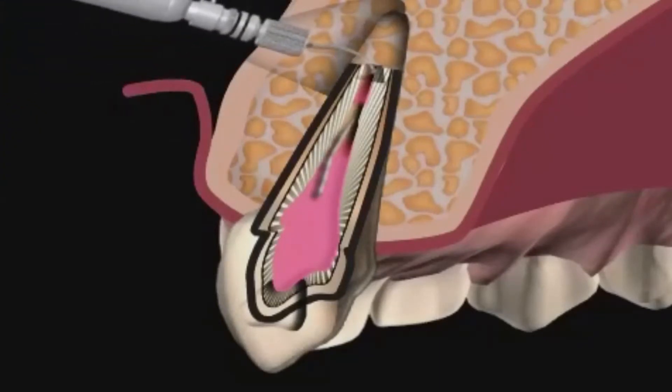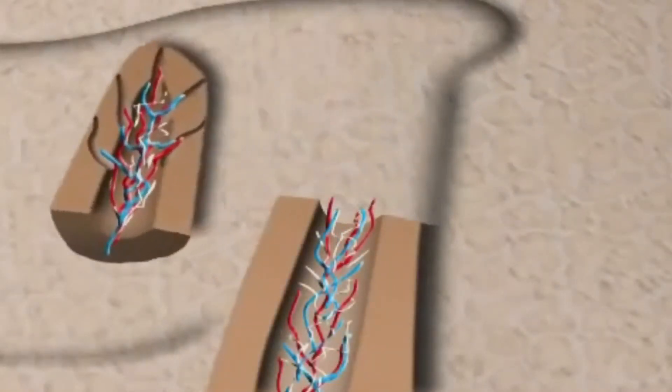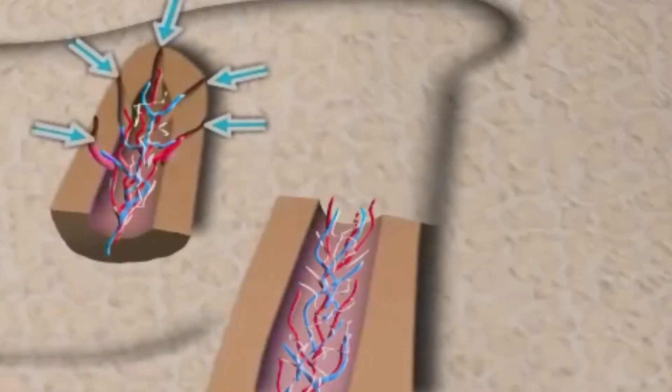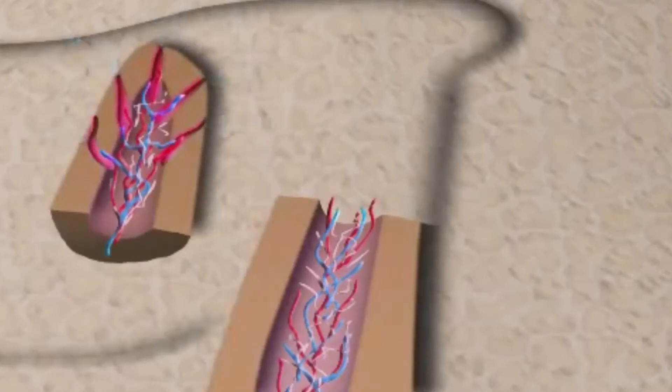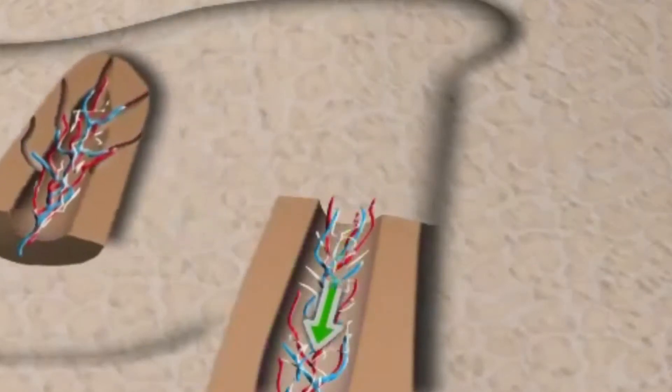By cutting the root tip, all non-refillable side canals, seen blinking here, are removed. The root tip itself often branches out into several single canals and therefore has only one cleanly filled main canal remaining. The inflammation origin is also removed.